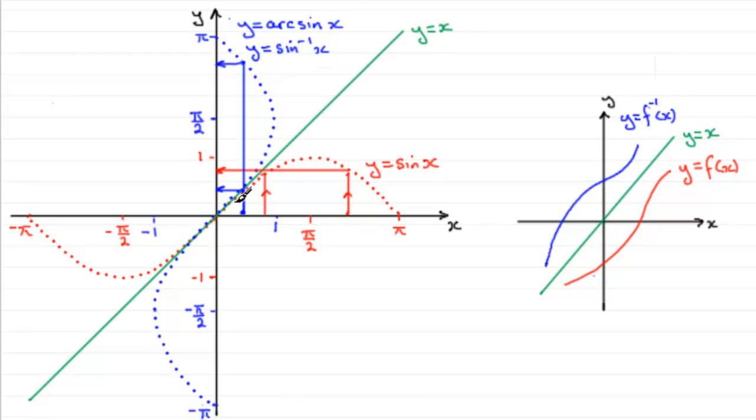For something to be a function, I must have just one unique value in the range for any value of x in the domain. So how are we going to get around this problem? Easy.